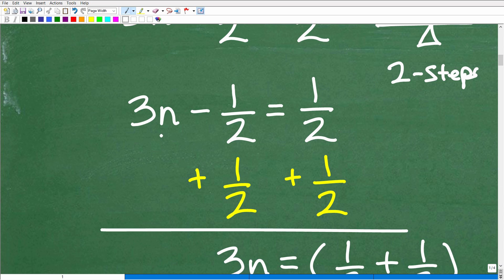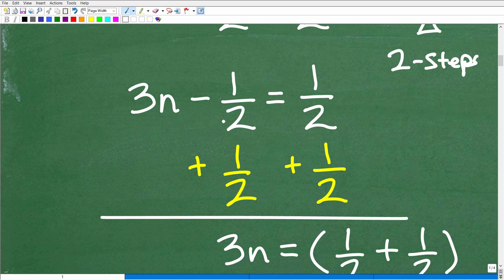So as I indicated, we have our variable term 3n to the left, but we don't have all of our numbers to the right. So how can we get this one-half to the other side? Well, this is a negative one-half. Well, if I add a one-half to a negative one-half, all of this right here will become zero.